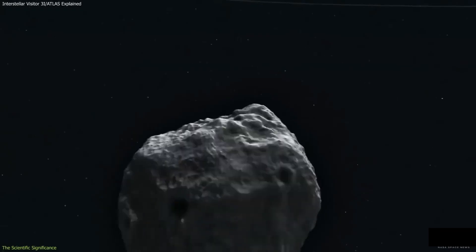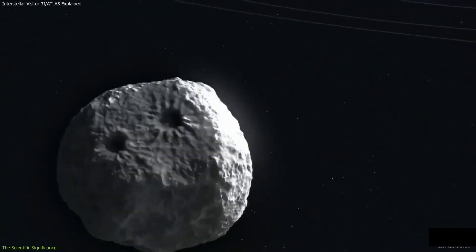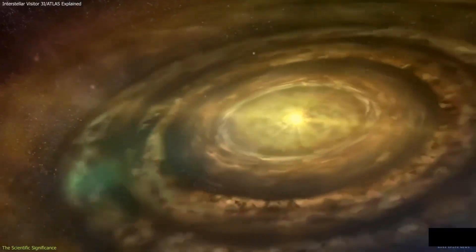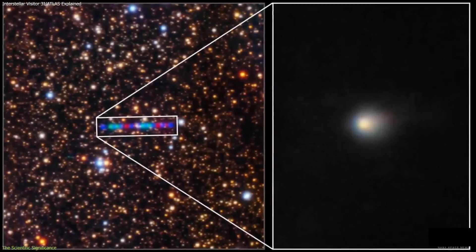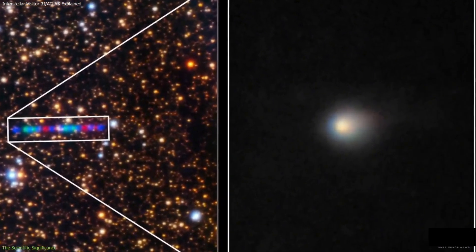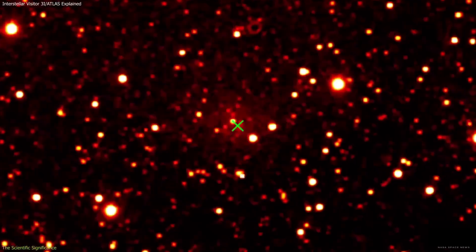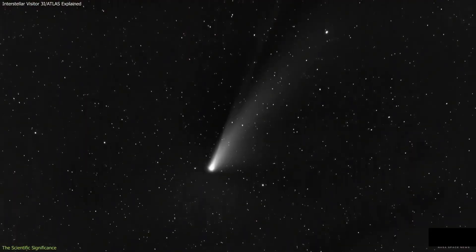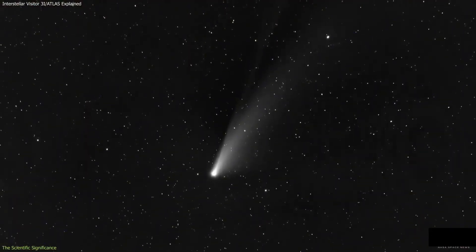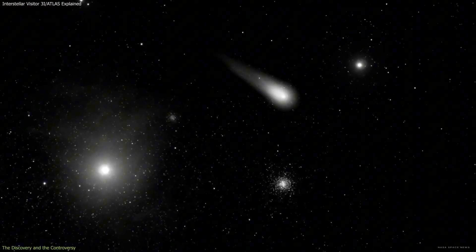Despite the data gaps, despite the uncertainties, the search continues. At this moment, as 3I Atlas glides silently between Mars and the Sun, it carries with it questions older than science itself. What worlds has it seen? What forces shaped it? And what other travelers, perhaps unnoticed, are already passing through the spaces between our stars?